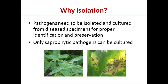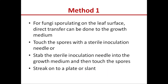On the right-hand side, we find Alternaria blight of mustard, a well-known disease that can be identified through its typical symptoms produced on the leaf. This Alternaria pathogen can be isolated in the lab, and in this lecture we will see how this pathogen can be isolated. Method one: for fungi sporulating on the leaf surface, direct transfer can be done to the growth medium.